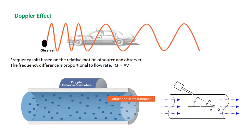The ultrasound is focused onto the liquid, which contains some bubbles or particles that act as the observer. The reflected frequency is then measured by the source. Since flow rate equals the cross-sectional area of the pipe multiplied by velocity, and the area is known, putting in this velocity gives us the volumetric flow rate.